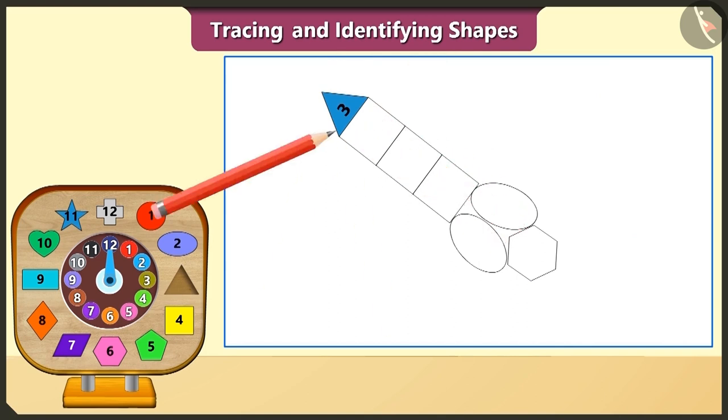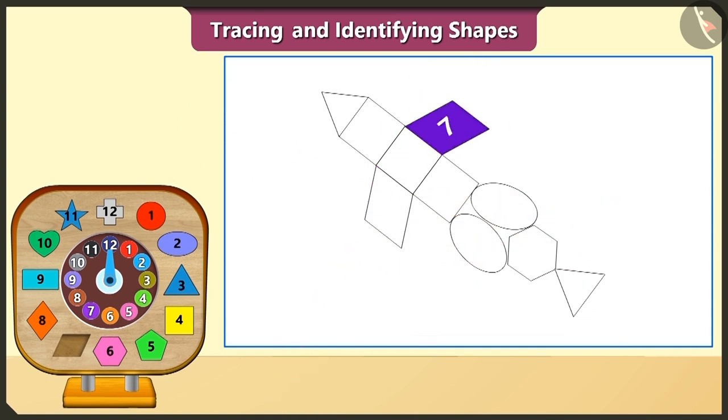Now we will trace this triangle block and draw two triangles like this. Now we will take the quadrilateral block and place it like this and then trace it and we will draw two quadrilaterals.